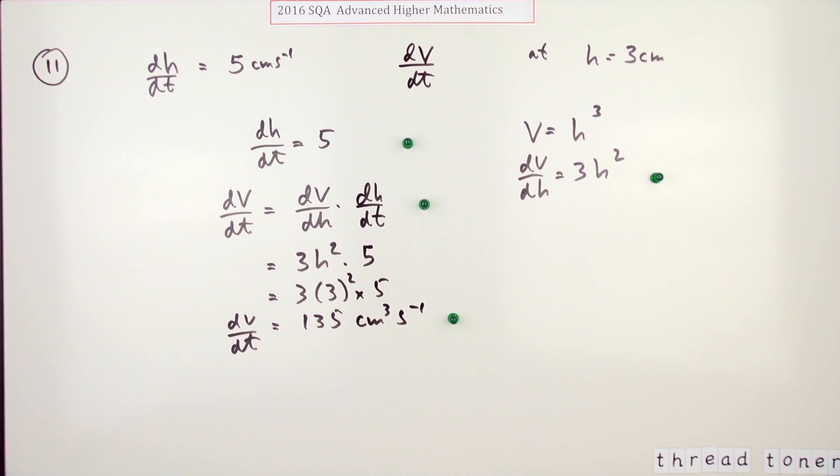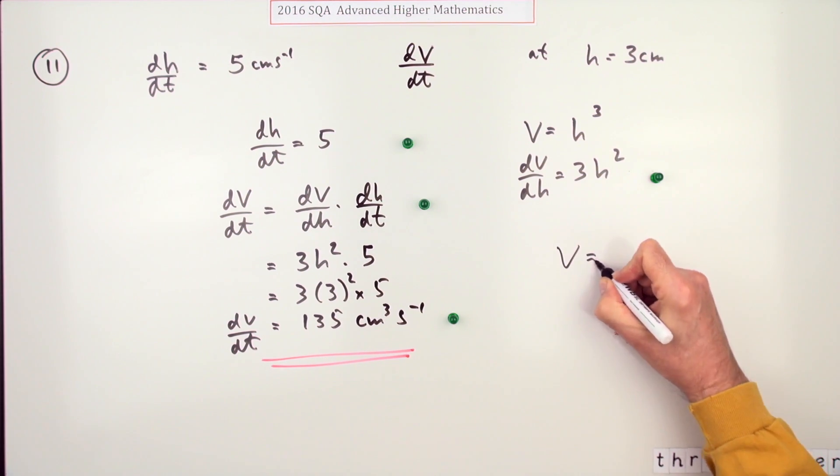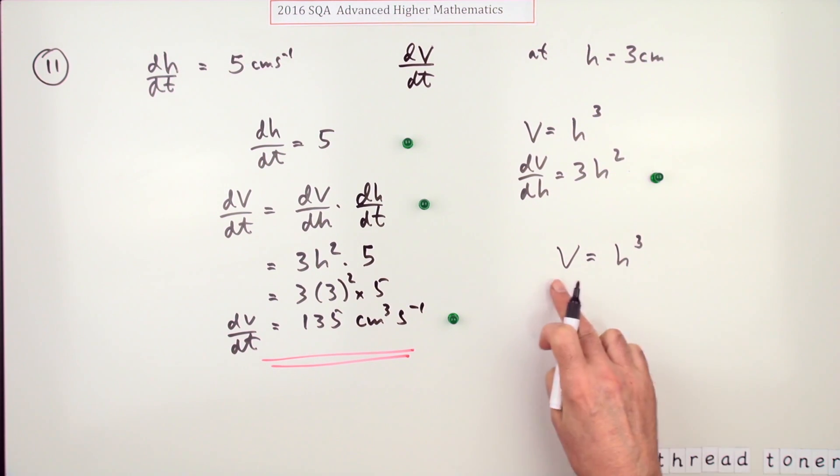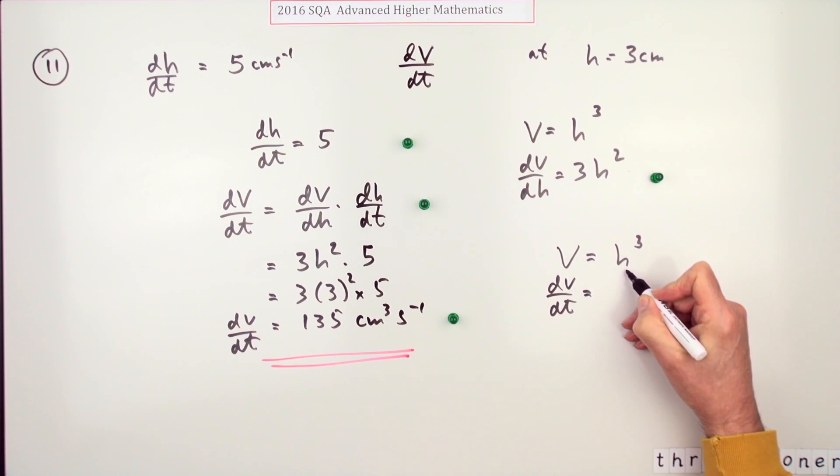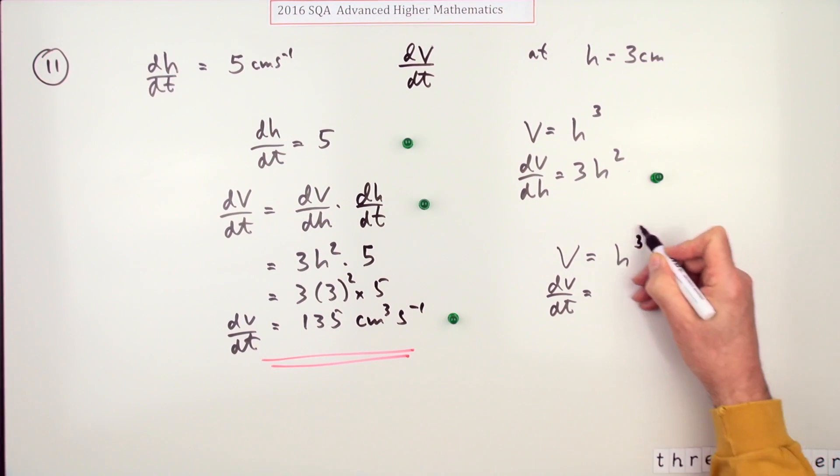And there's the fourth mark. Now you can shorten this process from here. This does not usually emphasize advanced high level by saying I'll differentiate both sides with respect to t. So you've got dV/dt, and since h is varying with respect to t, you've got a function of a function, so that'll be 3h squared times dh/dt.